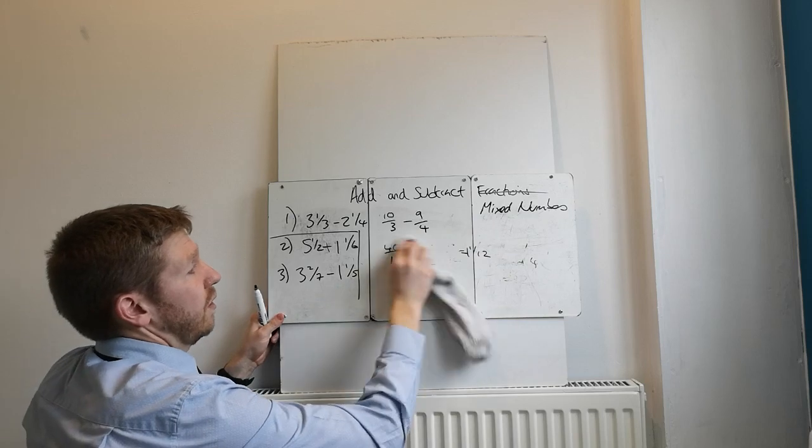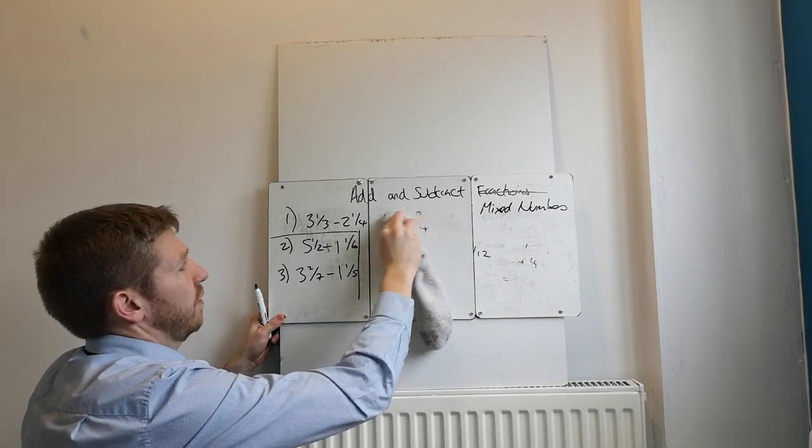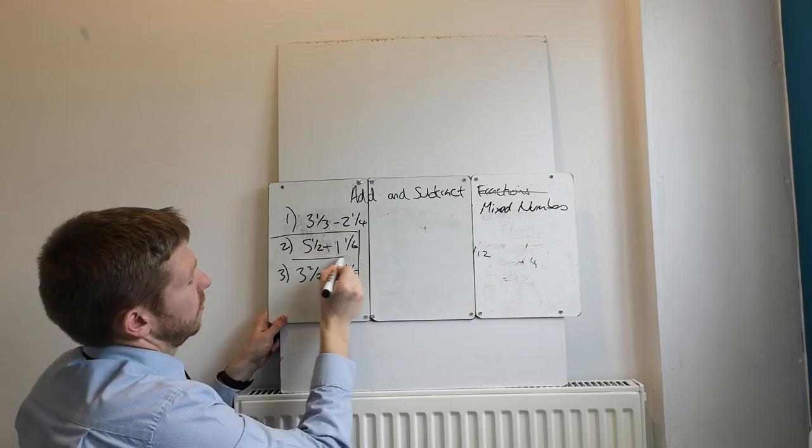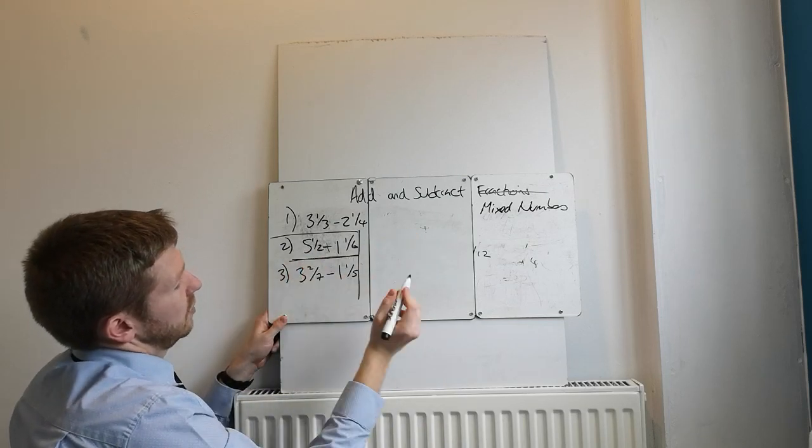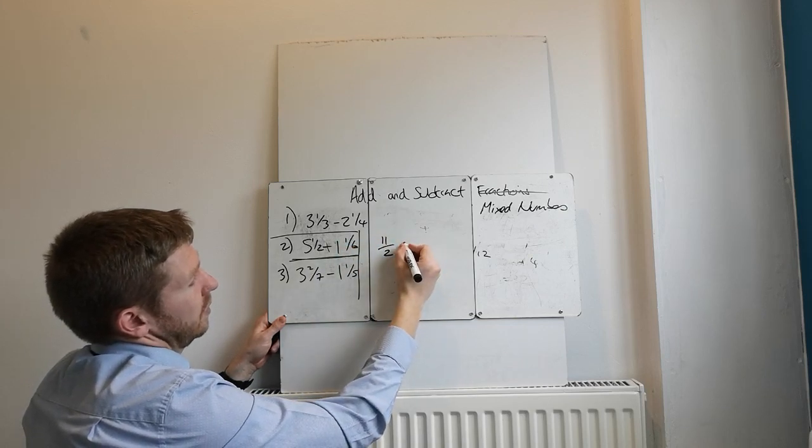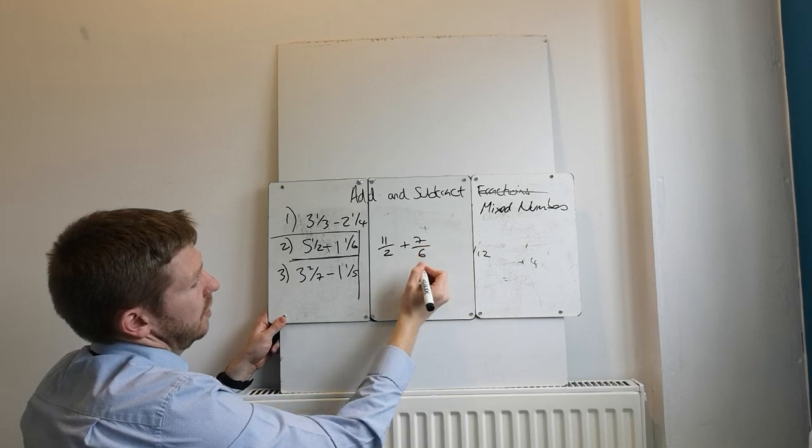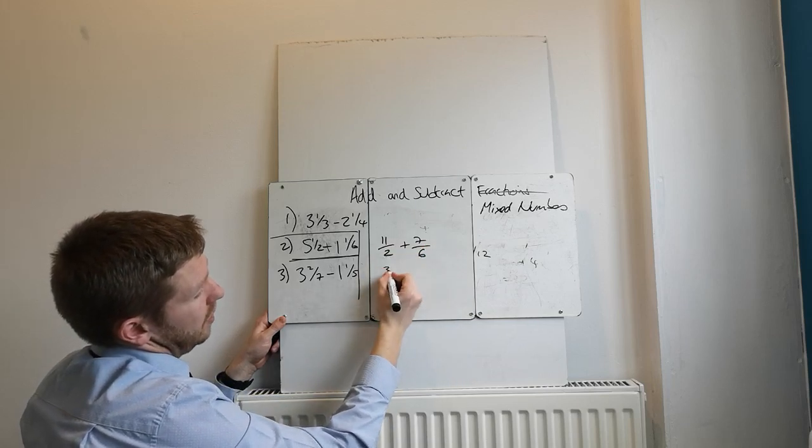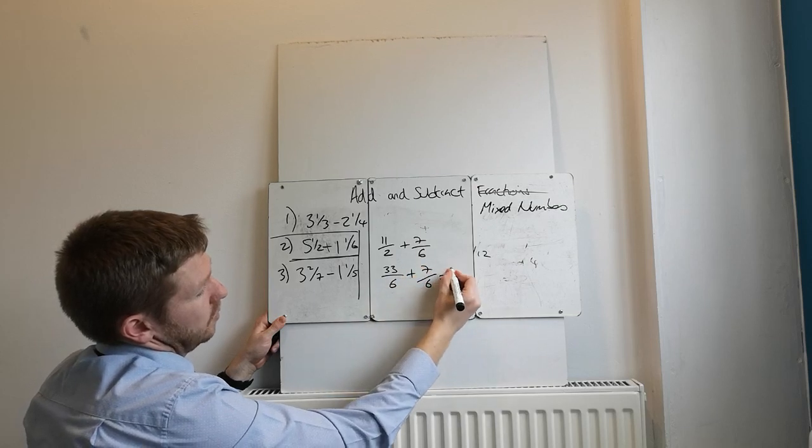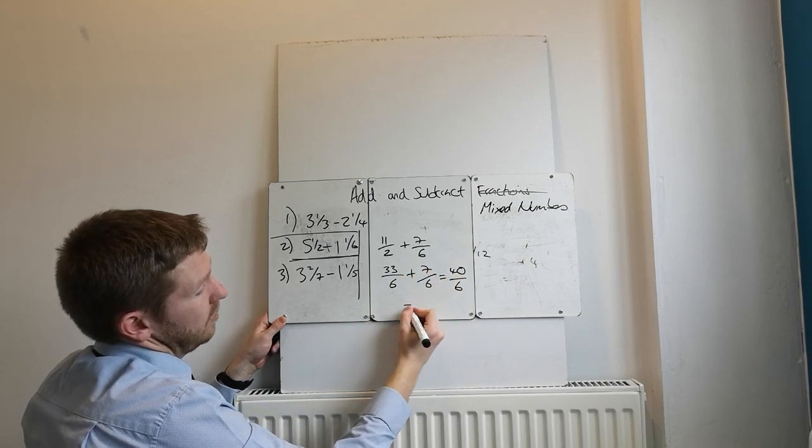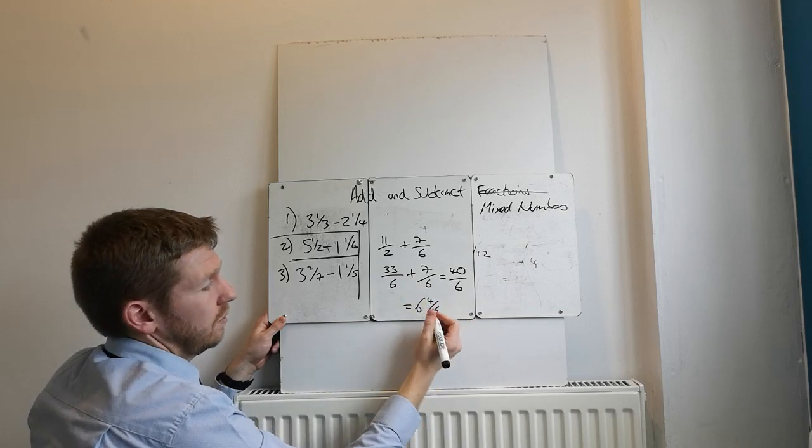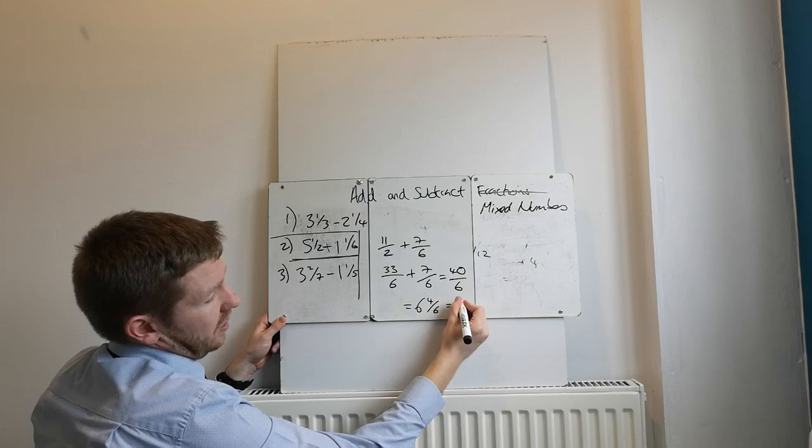Second one, so 5 and 1 half, 5 and 1 half plus 1 and 1 sixth. So I would do this one here now. 5 times 2, 10, add the 1, 11 over 2. 1 and 1 sixth is 7 over 6. Denominators need to be the same. Times this one by 3, so 33 over 6. Add 7 over 6 is equal to 40 over 6. How many 6s going to 40? It's 6. 6 sixes are 36. 6 and 4 sixths. I'll simplify that to 6 and 2 thirds.